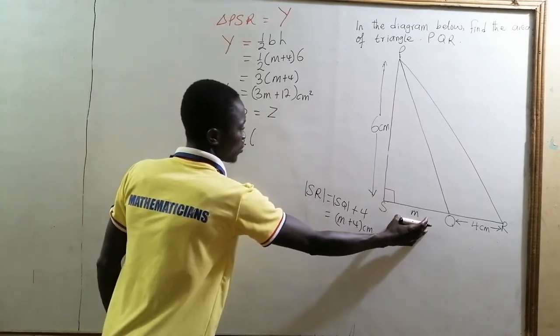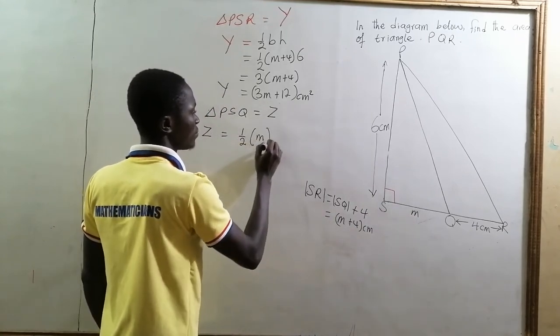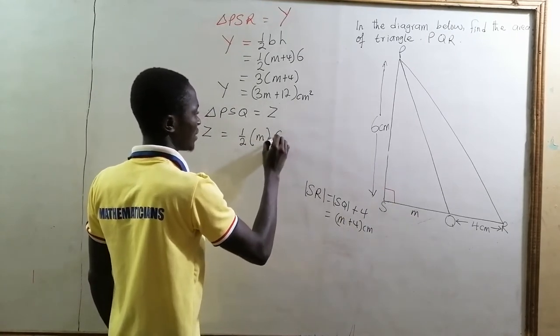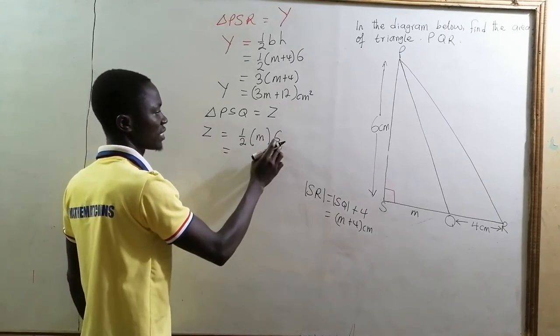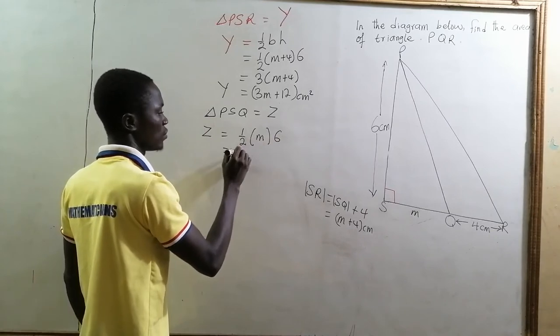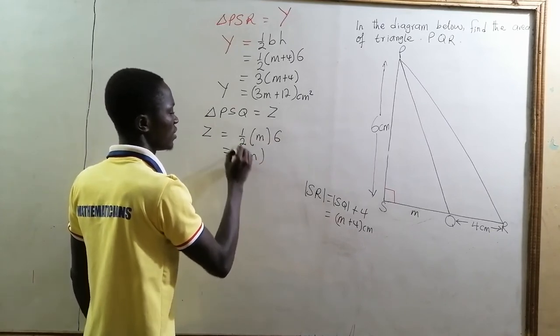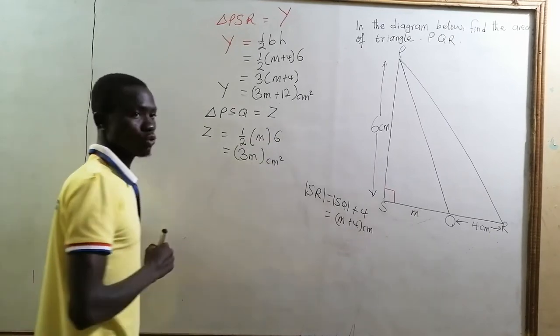If you consider SQ as the base, you are going to have M. And then PS as the height is 6. So the area of triangle PSQ is equal to half of 6, that is 3 times M, giving us 3M in centimeters squared.